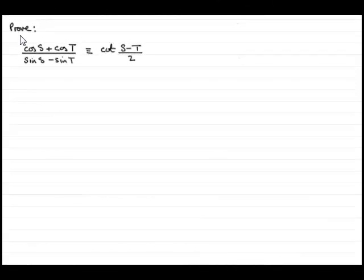In this example we need to prove that cos s plus cos t divided by sine s minus sine t is identical to cotangent of s minus t divided by 2.